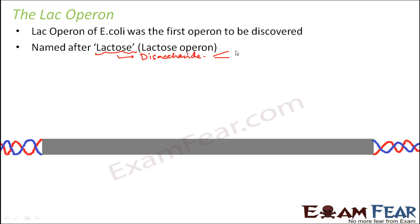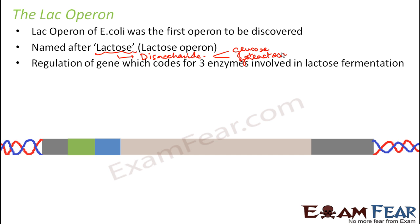Lactose needs to be broken down into glucose and galactose. This process of breaking down lactose into glucose and galactose to provide energy to E. coli is known as fermentation of lactose. This process of fermentation of lactose is controlled by the operon called the lac operon, and we will see how exactly the operon functions and what its various parts are.